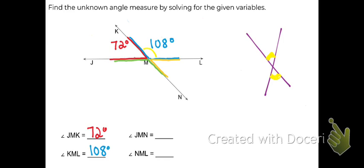So 108, this blue angle, is a vertical angle to this green angle. So that means this green angle is also 108 degrees because they are across from each other. So the green angle is J, M, N.